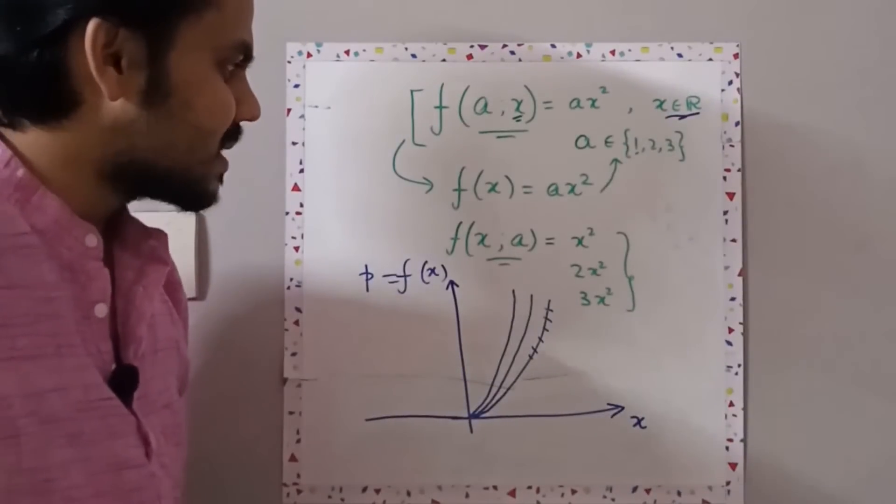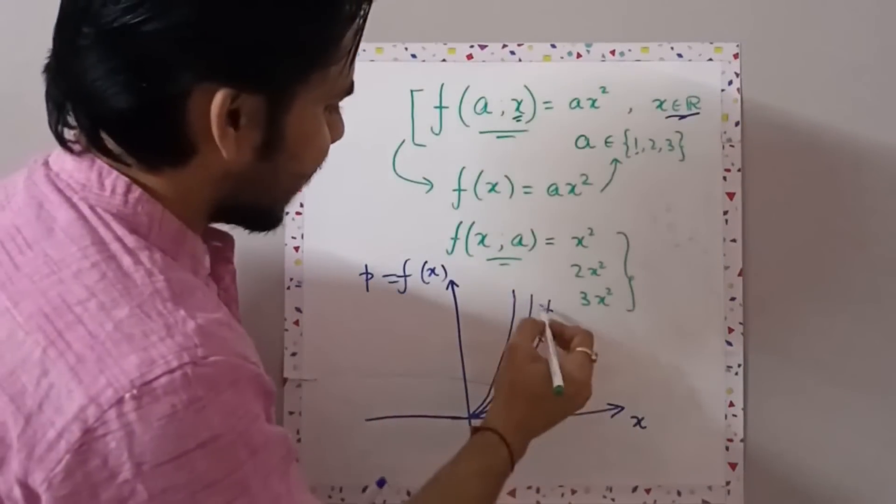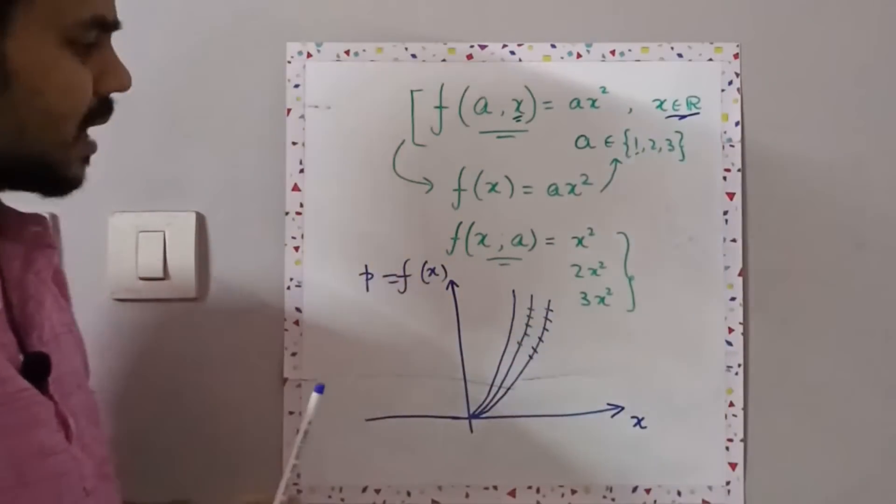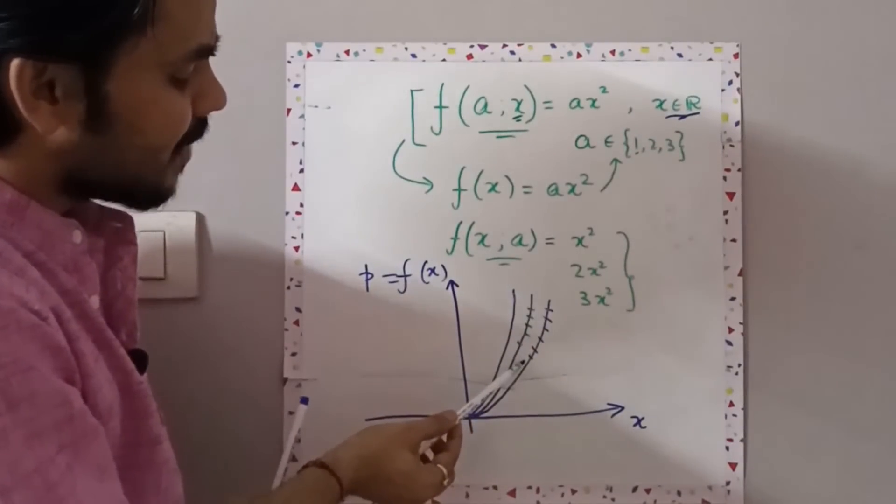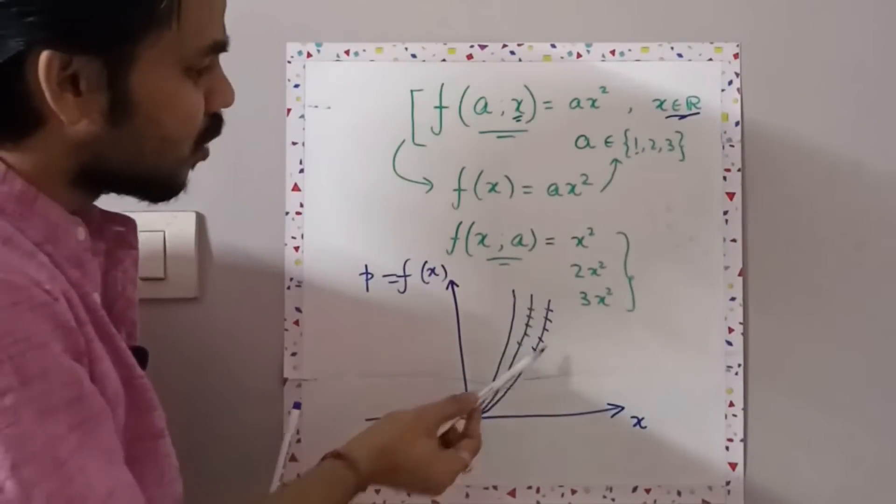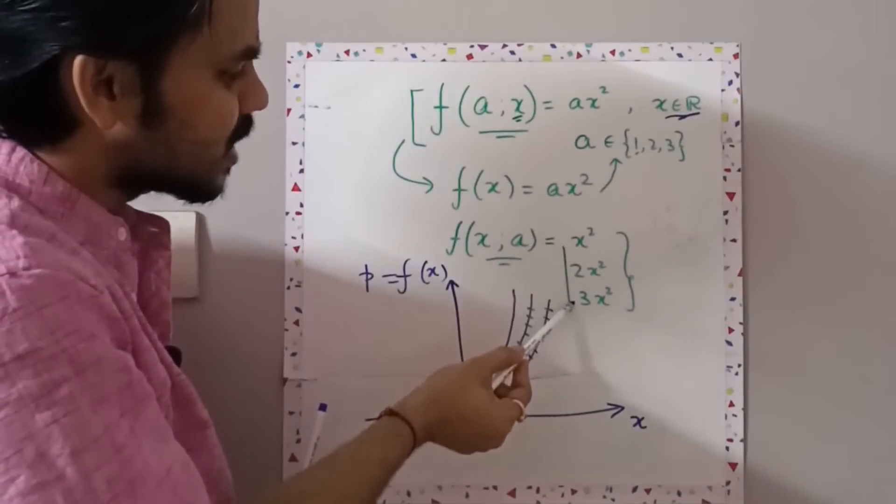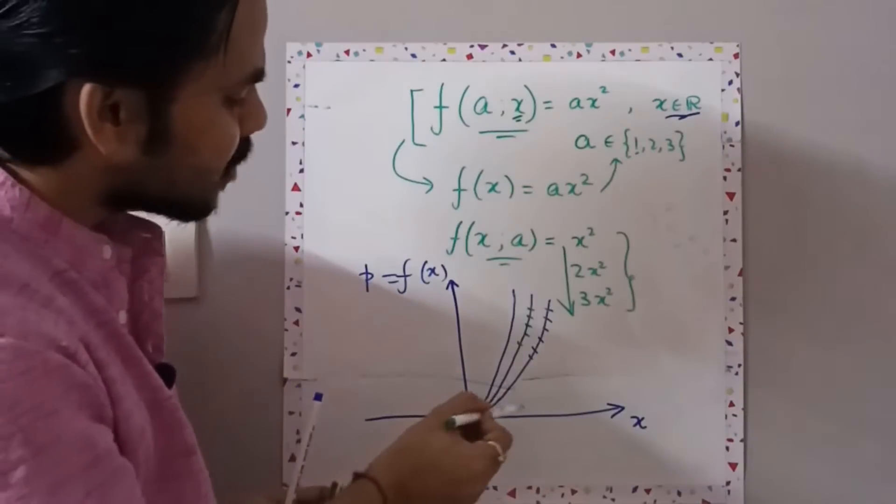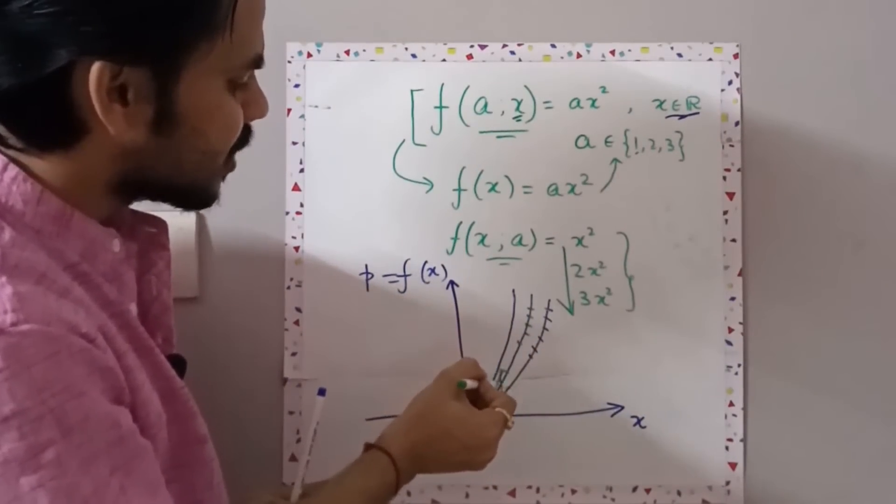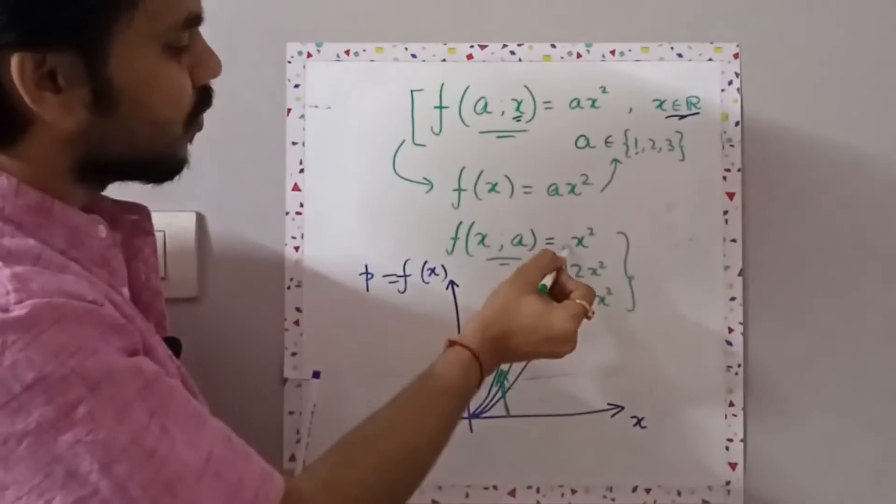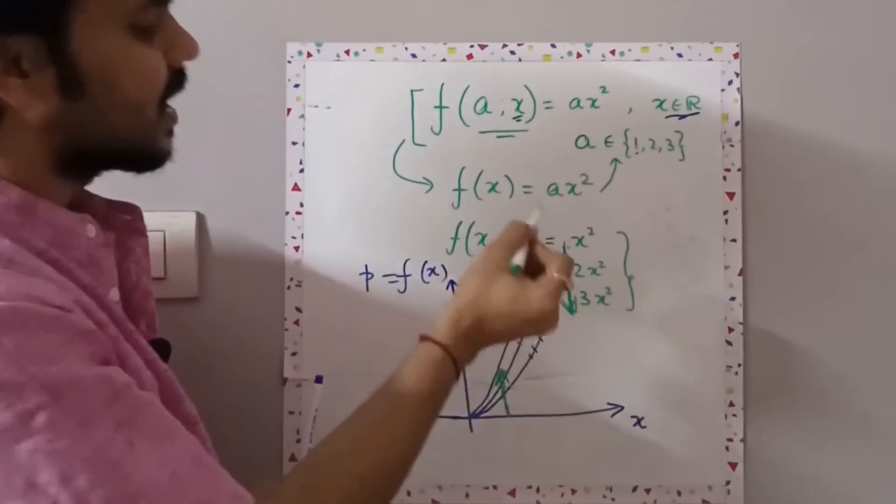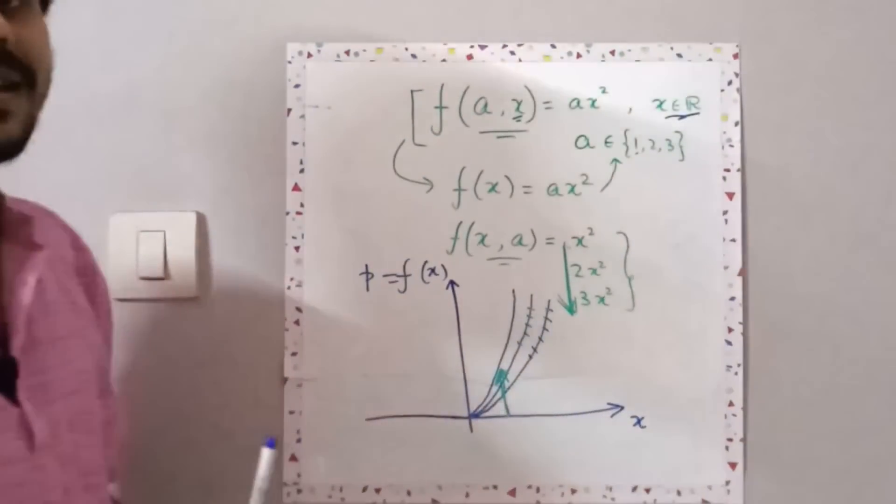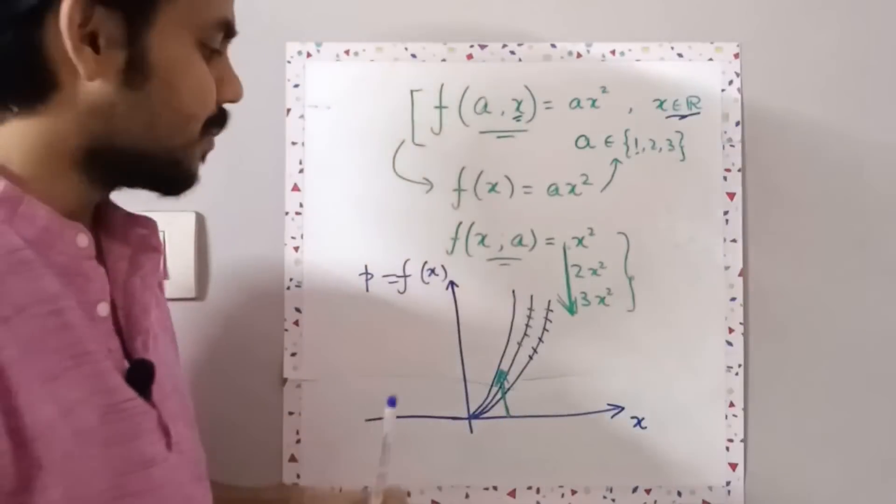Now if I take x², this will be my supply. If I take 2x², my supply will be denoted by this one, and for 3x², the above part. So essentially I am having steeper supply as I go from x² to 3x².